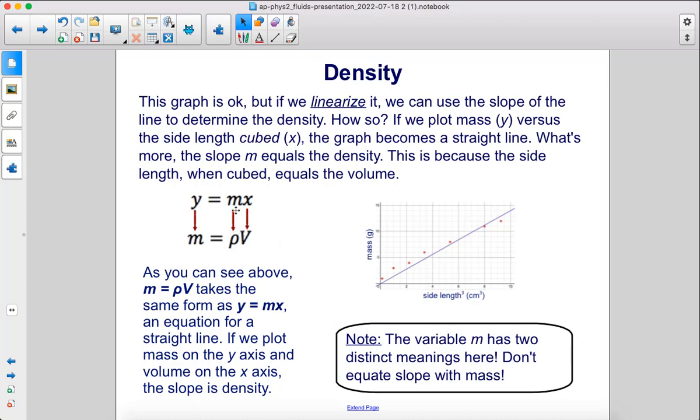Note, the variable m here has two distinct meanings. This is mass. This one is slope.